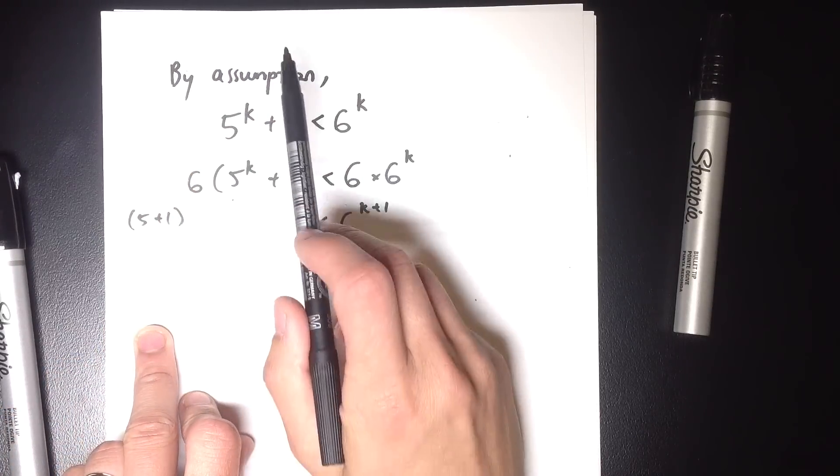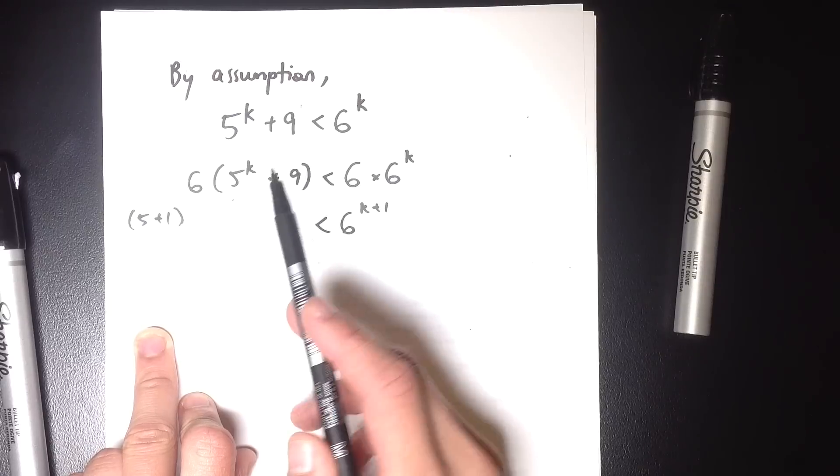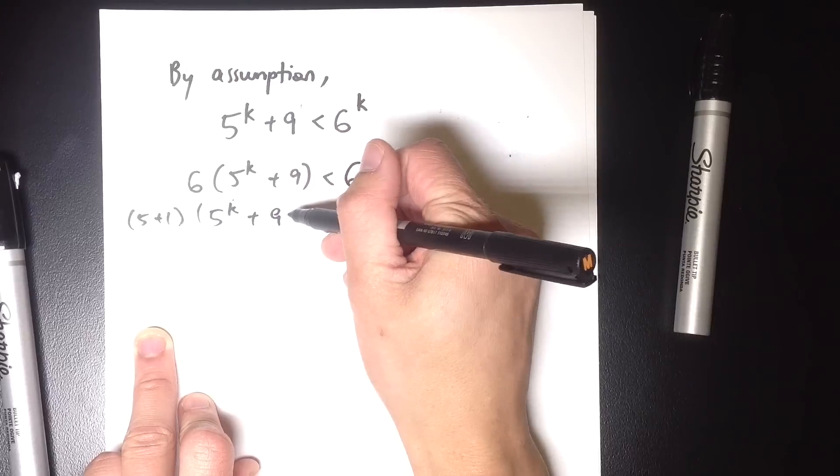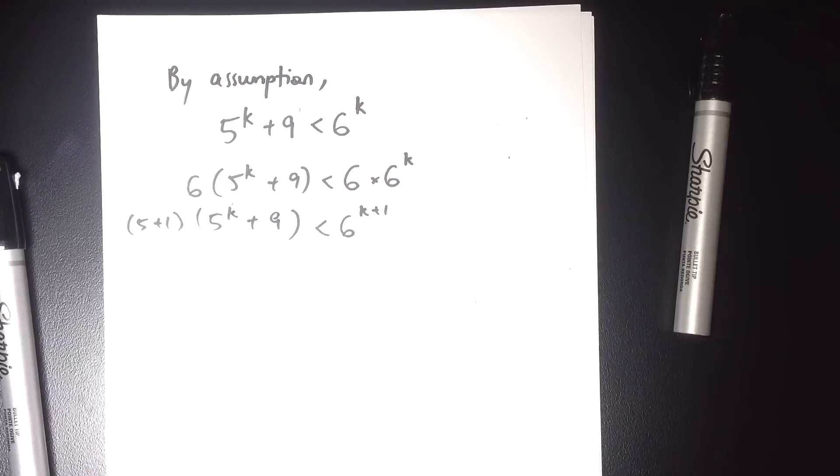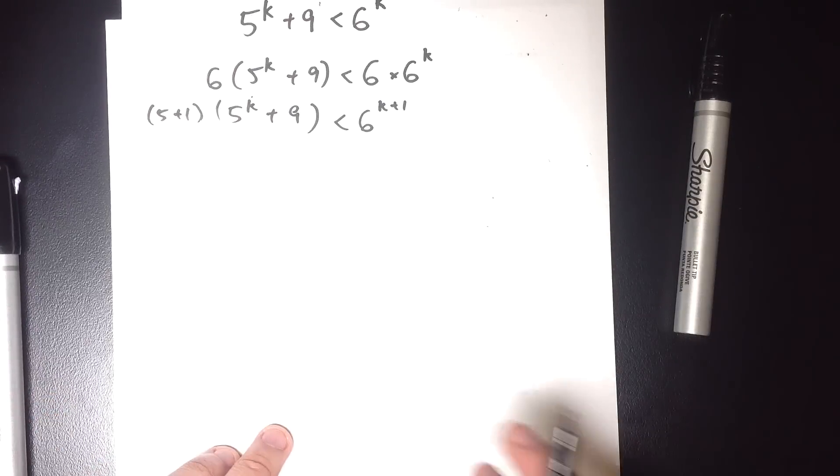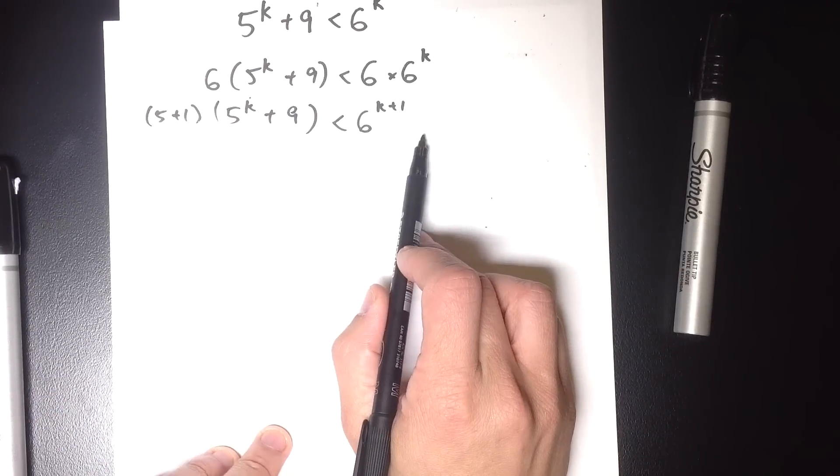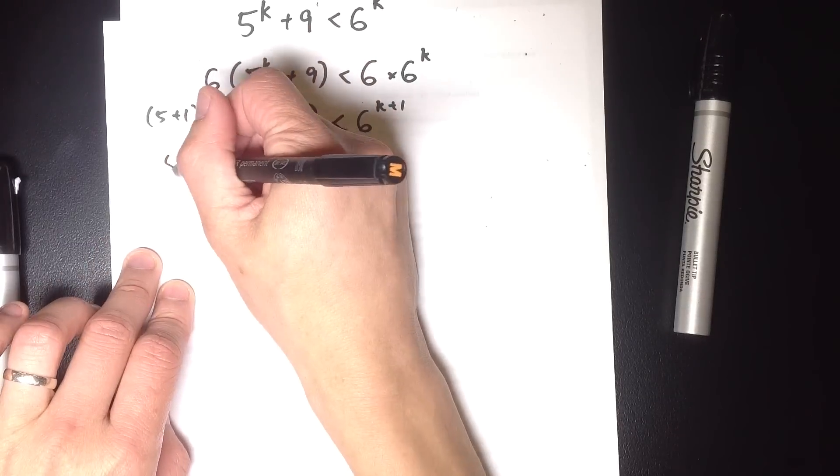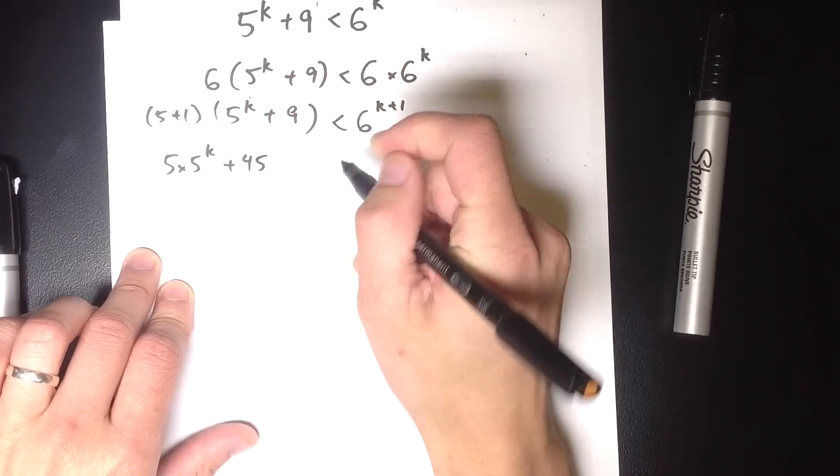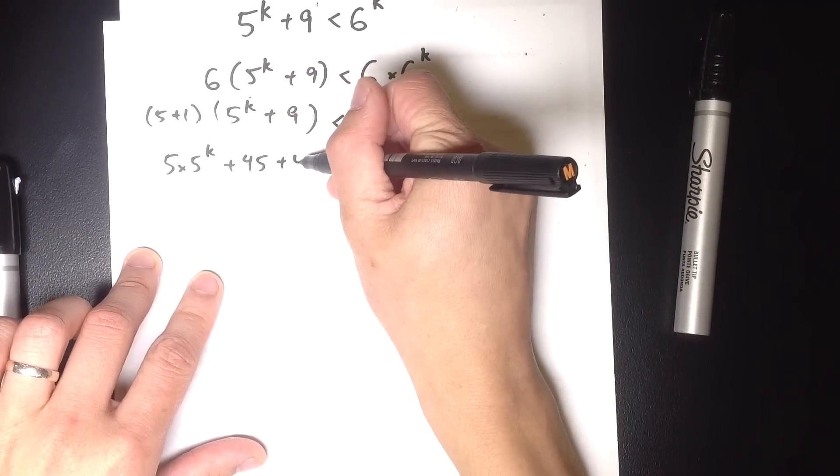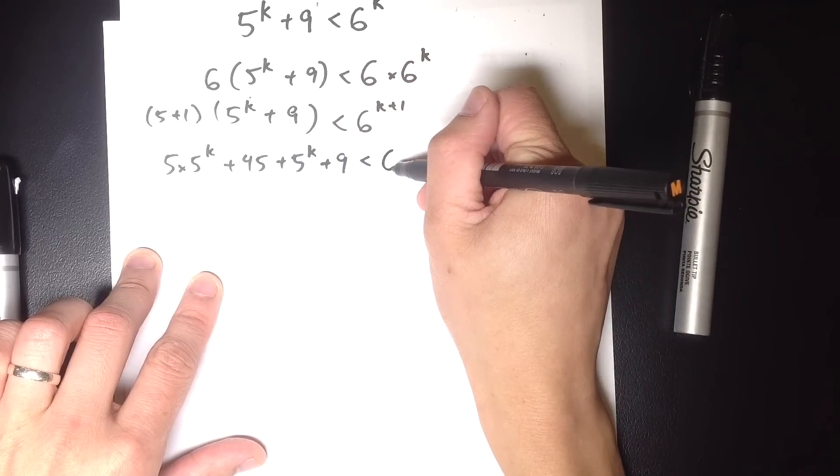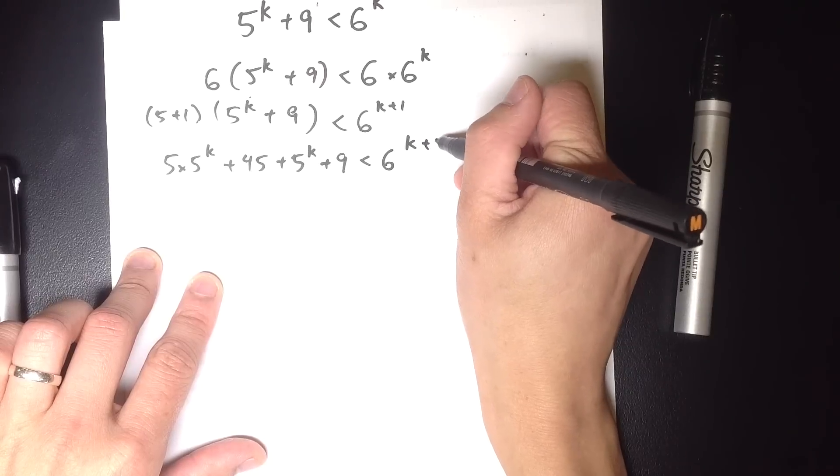So what I'm going to do is I'm going to rewrite that 6 as 5 plus 1. Now, why am I going to rewrite it as 5 plus 1? Because I want to multiply that 5 to the k by 5. So 5 plus 1 outside of 5 to the k plus 9. Now, when I expand this left hand side, and now I'm just looking exclusively at the left hand side because the right hand side is exactly how I want it. What am I going to have? Well, let's do the 5 first. So I've got 5 times 5 to the k, and then 5 times 9 is 45. Then I've got one lot of 5 to the k, and I've got a 9. That's less than 6 to the k plus 1.